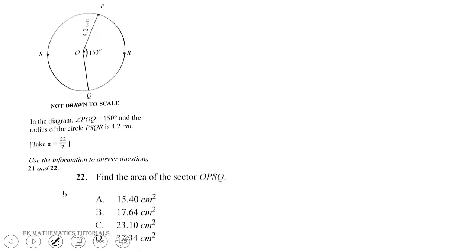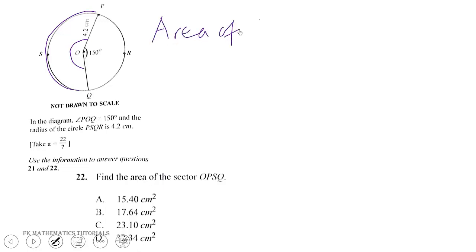In the diagram, angle PQ is equal to 150 degrees. Using the same diagram, we are now finding the area of the sector OPSQ. This is the major sector, so we need to find the difference in angles. The area of a sector is given by theta over 360 times pi r squared.